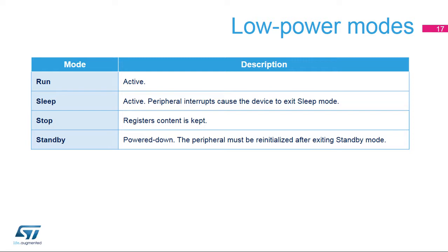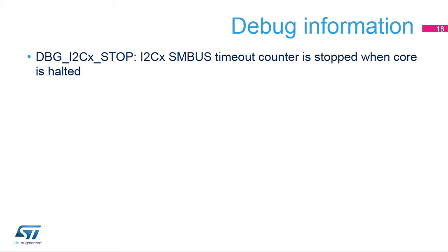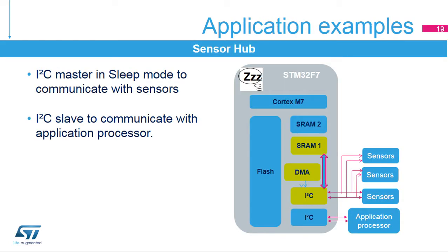The I2C peripheral is active in Run and Sleep modes. In Stop mode, the peripheral clocks are off and the registers' content is kept. In Standby mode, the peripheral is powered down and must be re-initialized after exiting Standby mode. For each I2C peripheral, a bit is available for debugging purposes in the MCU Debug component that can be used to stop the SMBus Timeout counter when the core is halted.